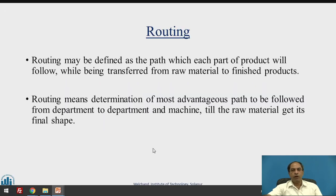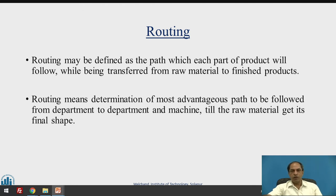What is routing? Production planning and control is an important function in the entire organization. It deals with three stages: pre-planning, planning, and control. We need to do some work before we plan — that is generally called the pre-planning stage. Then the actual planning of the entire production or service management systems, and at the end we have controlling, which checks progress whether things are happening as per plan, and if not, what corrective actions are required.